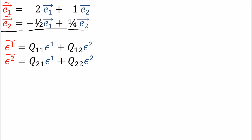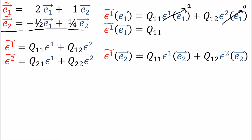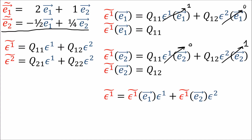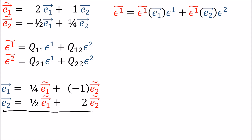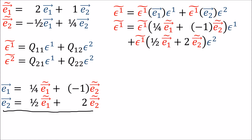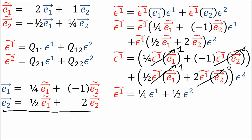To figure this out, we start by applying epsilon-1-tilde to e1. Replacing epsilon-1-tilde with the epsilons as written and using linearity rules, we find that epsilon-tilde of e1 equals q11, and applying epsilon-1-tilde to e2 gives q12. An alternative way of writing epsilon-1-tilde follows from this, where these parts are just numbers. Bringing in our backward transformation to write old basis vectors in terms of new basis vectors, and using linearity of co-vectors, we get the new dual basis vectors expressed in terms of the old.